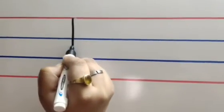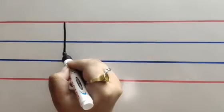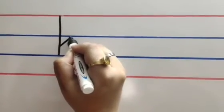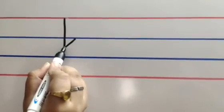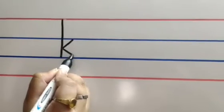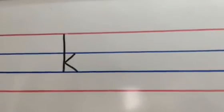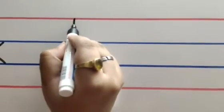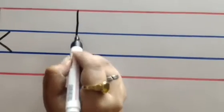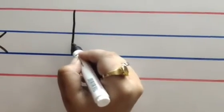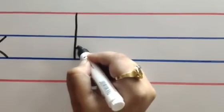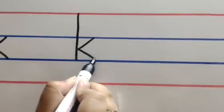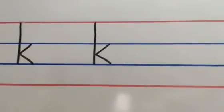Make a standing line from the red line till the second blue line, and from the between make a slant line up till the first blue line and a slant line down till the second blue line. This is how we make a small letter K.